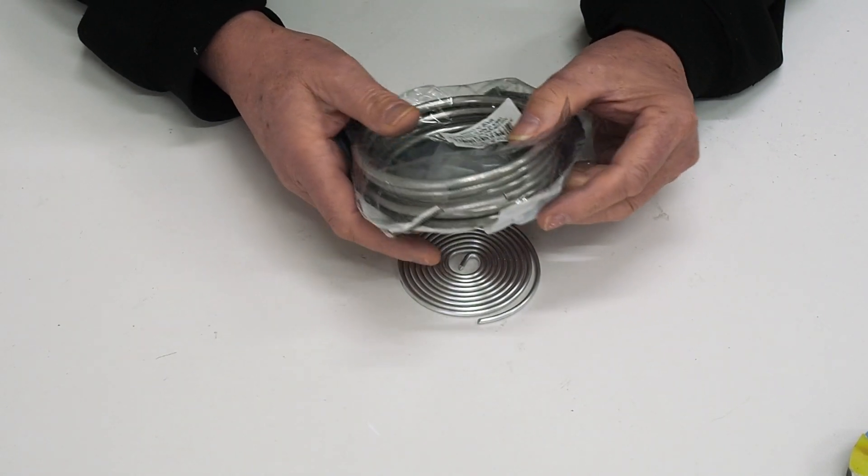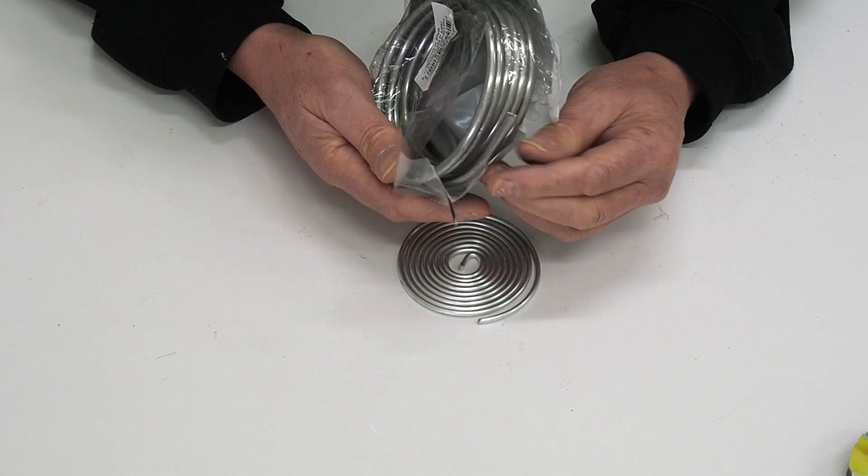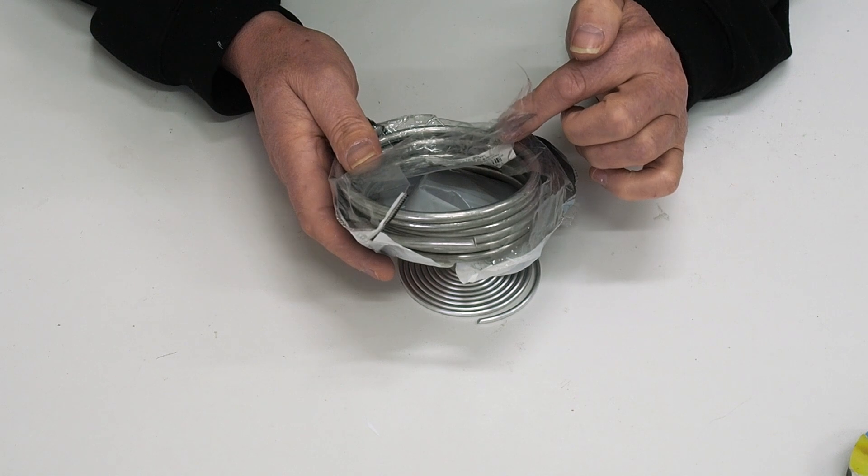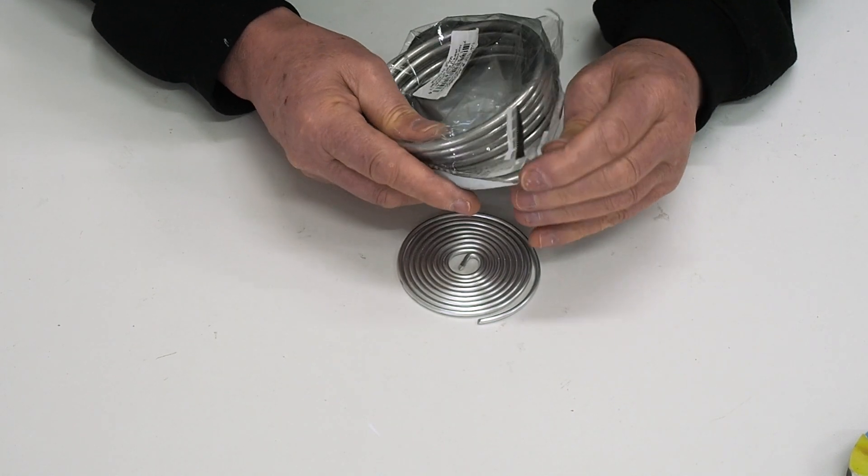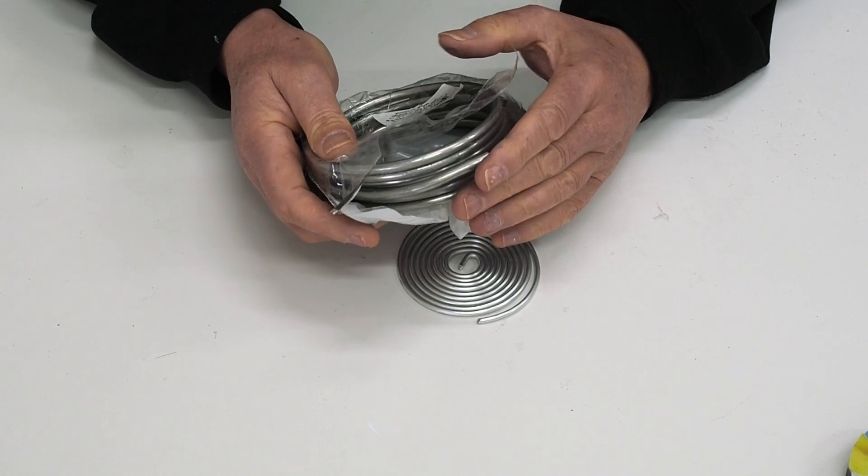We also have this one here, which is also armature wire and it's quite thick. On the packaging it says it's quarter of an inch, and it is quite easy to manipulate, but if you're making something small, that will make it harder because it is so thick, so keep that in mind.